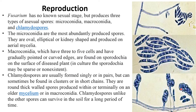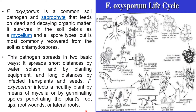Chlamydospores, unlike other spores, can survive in soil for a long period of time. Now I will explain the life cycle of Fusarium using one of the species called Fusarium oxysporum. It is a common soil pathogen and a saprobe that feeds on dead and decaying organic matter. It survives in soil debris as mycelium or as spore types, but is most commonly recovered from soil as chlamydospores.